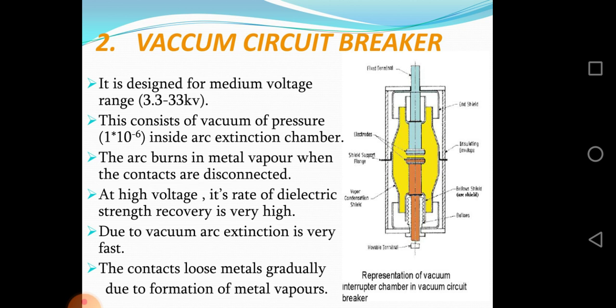The second type is the vacuum circuit breaker, designed for medium voltage range: 3.3 kV to 33 kV. This consists of a vacuum of pressure 1 x 10 to the power minus 6.